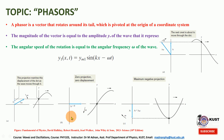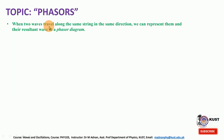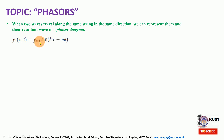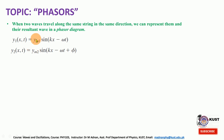This is taken from your course book. When two waves travel along the same string in the same direction, we can represent them and their resultant wave in a phasor diagram. The first wave is represented by y1m sin(kx − ωt). As you saw in the last lecture y1m and y2m were equal, but now they are different. Also there is a phase difference of phi between the two. When the waves have different amplitudes, the phasor diagram is a handy way to describe the resultant wave.